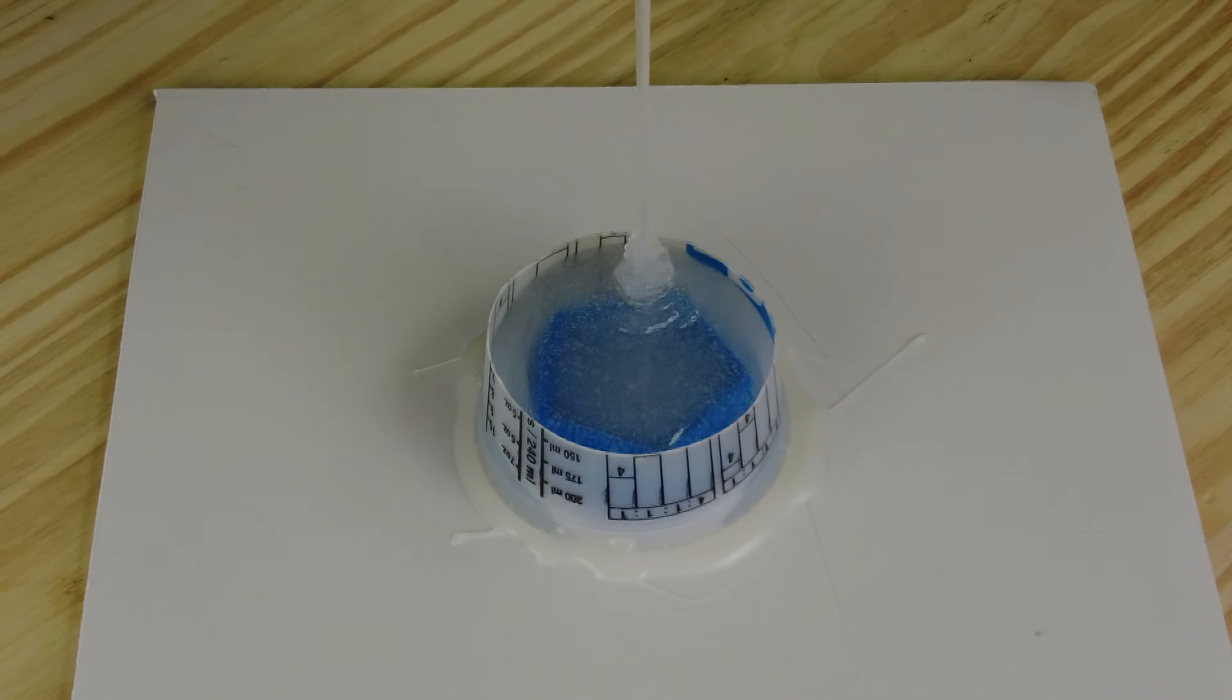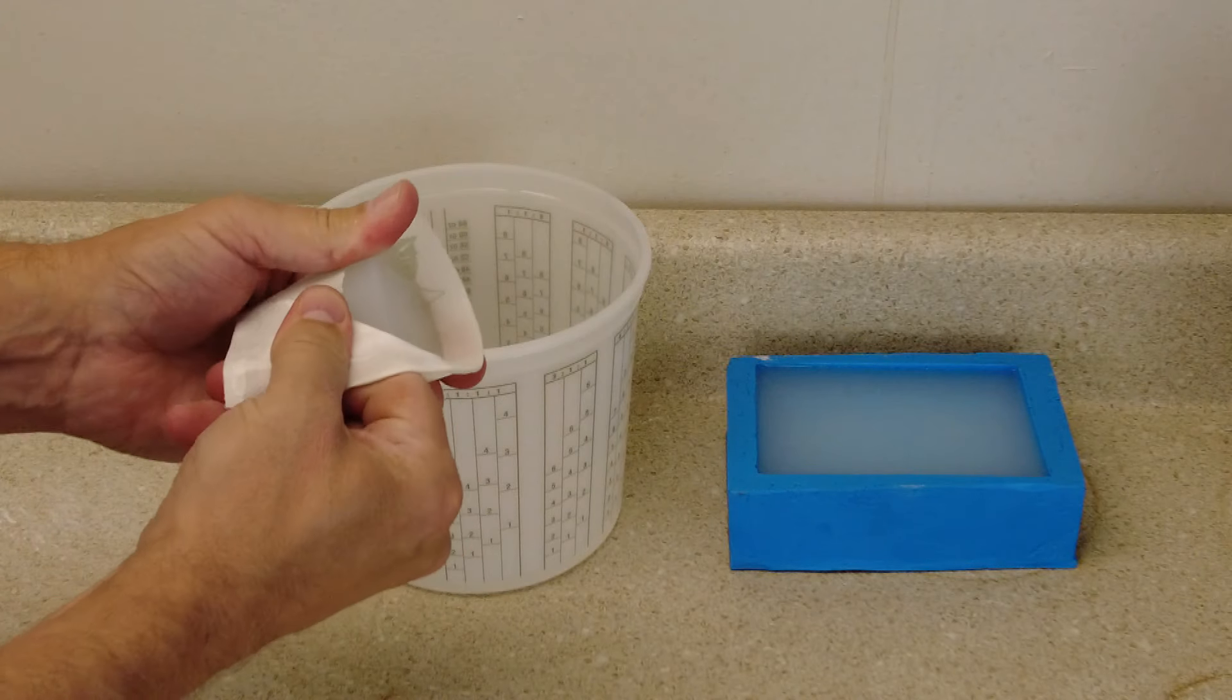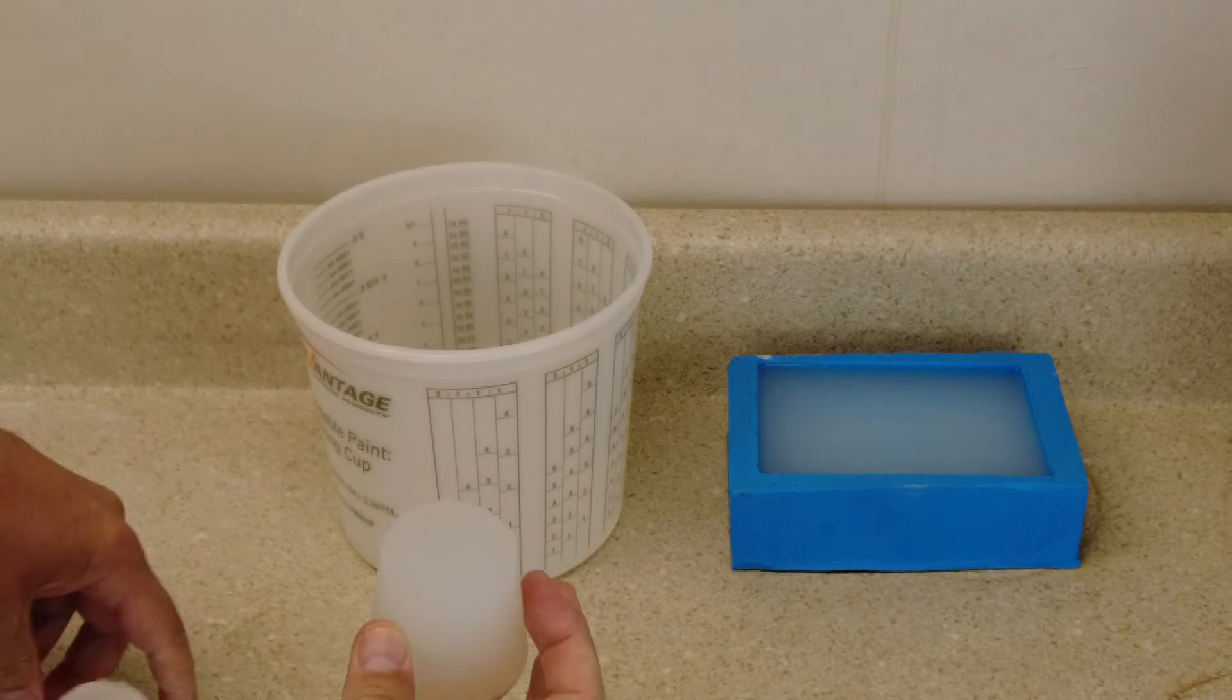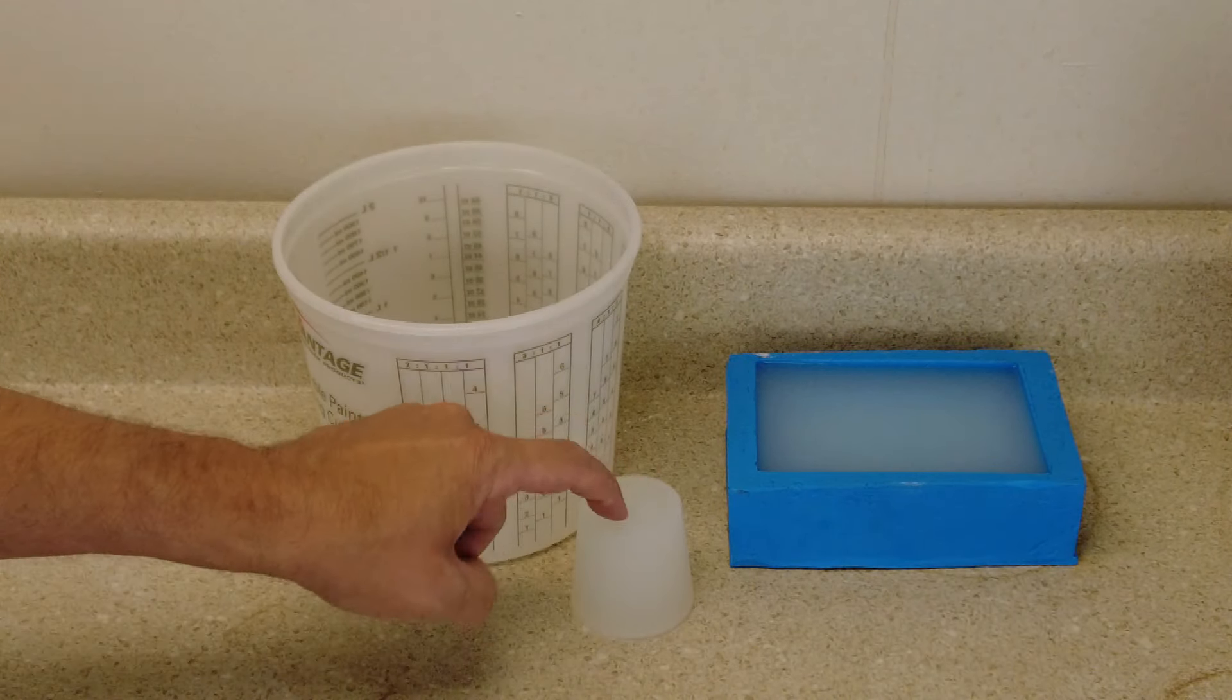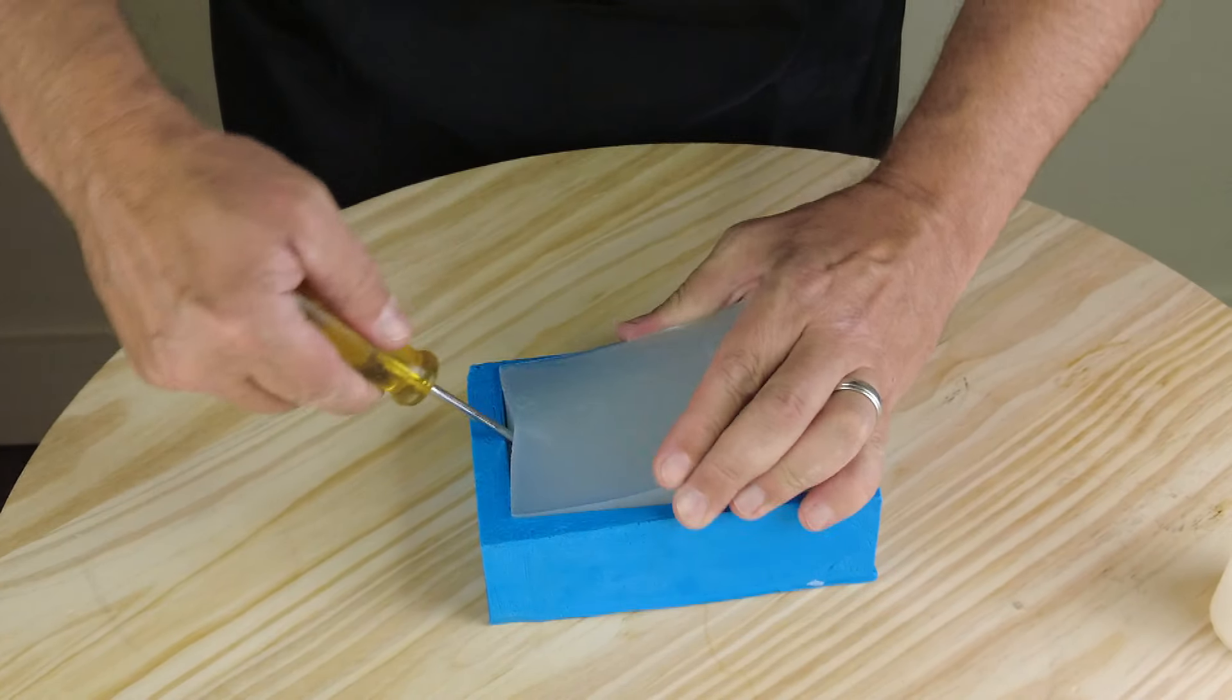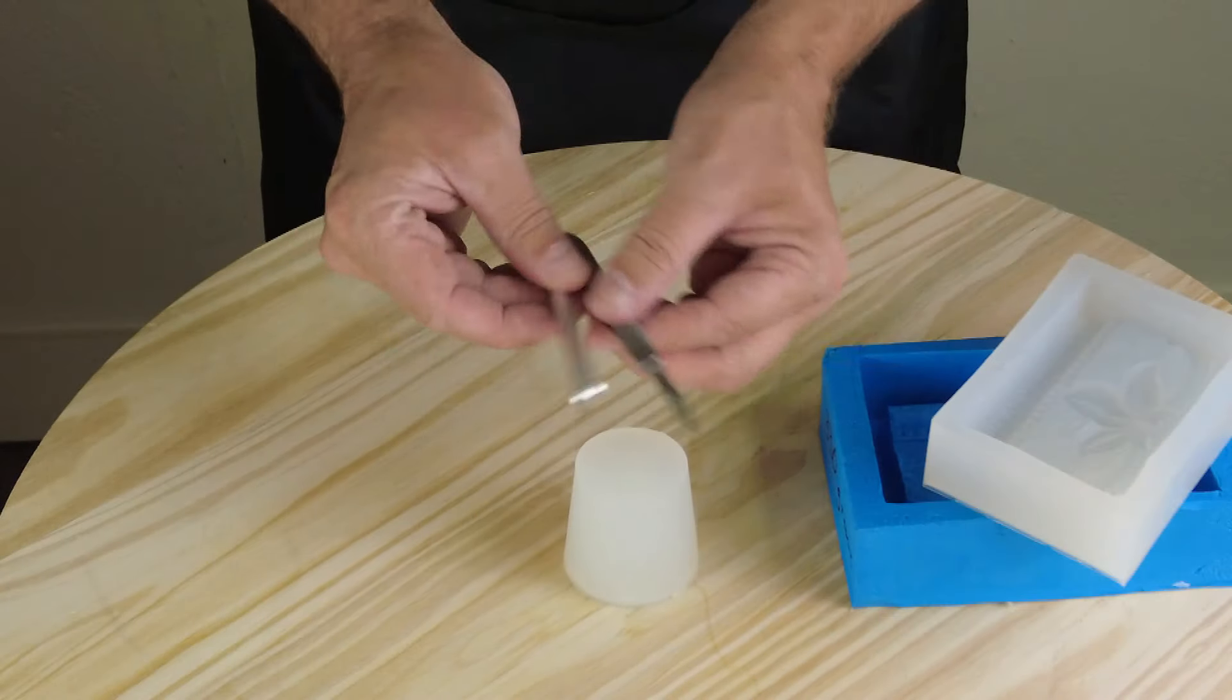And now we're going to let that sit and cure completely. Now 5140, even though it does have a fairly long working time, it still has a pretty fast turnaround time. It has a demold time of about three to four hours at room temperature. So this is about three and a half, four hours later or so. And first thing I do is demold either my mixing bucket or these little plugs. And I use those for storing pointy things. I use that to store my X-Acto blades and scalpels and stuff like that.